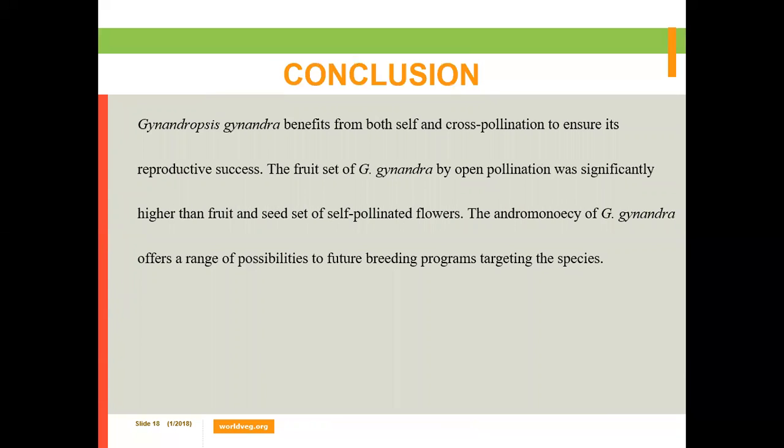In conclusion, Gynandropsis gynandra benefits from both self- and cross-pollination to ensure its reproductive success. The fruit set by open pollination was significantly higher than that of self-pollinated flowers. The andromonoecy of Gynandropsis gynandra offers a range of possibilities for future breeding programmes targeting the species. Thank you very much for your kind attention.